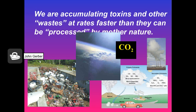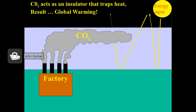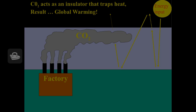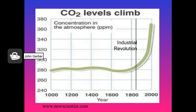We're not only using stuff up, we're throwing it out. Accumulation of toxins and other wastes are happening at faster rates than can be processed by Mother Nature. Carbon dioxide is an example, resulting in climate change. Climate disruption is caused by burning of fossil fuels and increased levels of carbon dioxide and methane in the atmosphere. We're not adequately addressing this in any way.